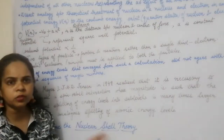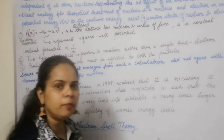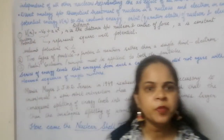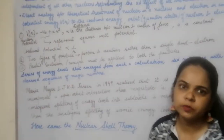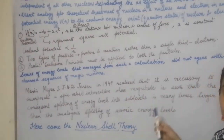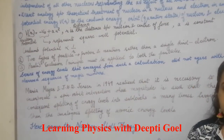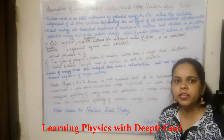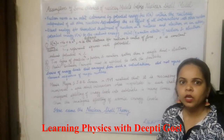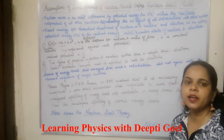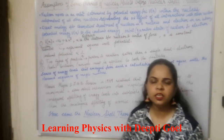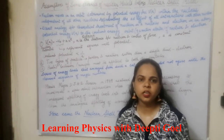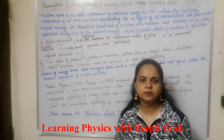Magic numbers were justified by using the shell model, and all these observations led to the development of the shell model. Next, we shall discuss the nuclear shell model.